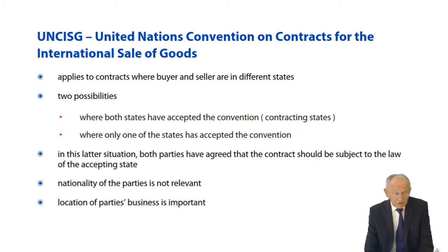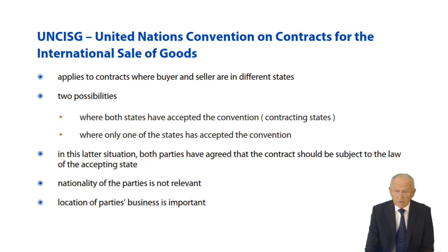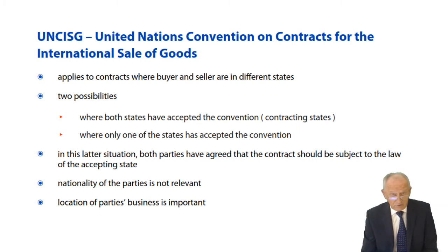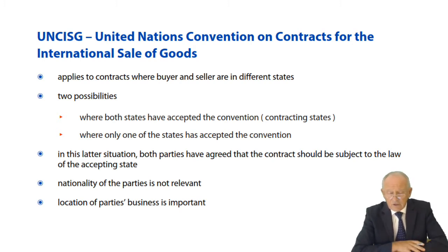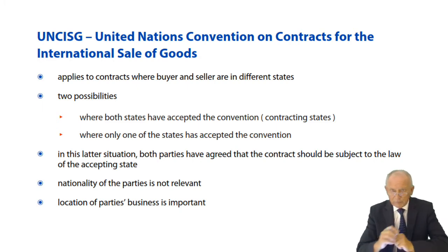In that case, the convention doesn't apply. We're looking at two relevant possibilities. The ideal one is where both parties' states have signed into the convention. The second possibility is where only one of the parties' states has signed in. It's not the nationality of the individuals that is important — it's the location of their business, the location where the trade is being carried out.